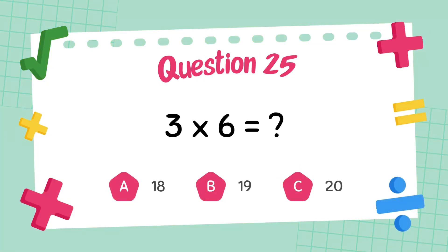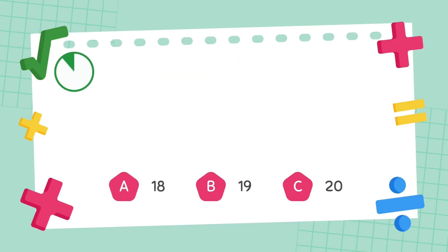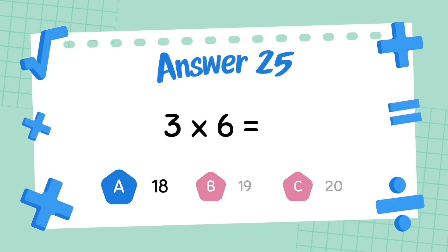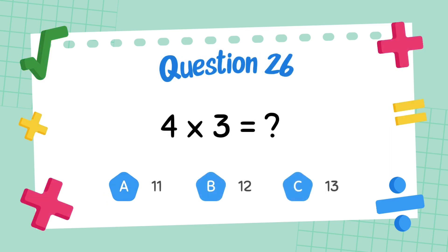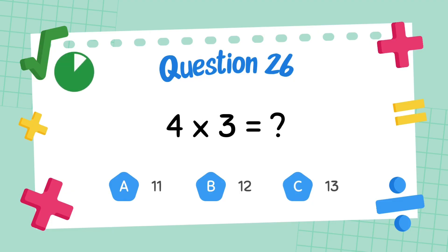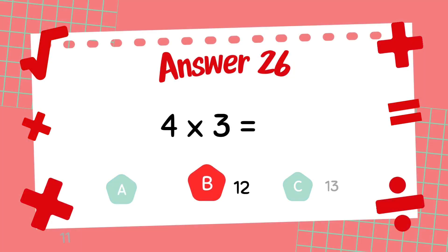What is 3 multiply 6? The answer is 18. What is 4 multiply 3? The answer is 12.